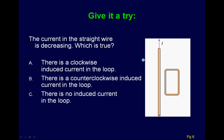Let's try an example. Here we have a current in a long wire. The current in the straight wire is decreasing. Which direction does the induced current flow in the loop? Think about this and we'll talk about it in a second.